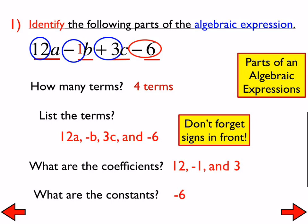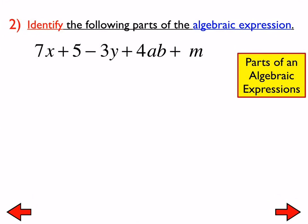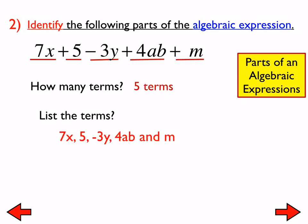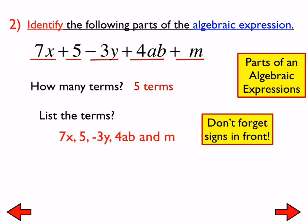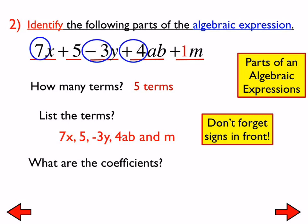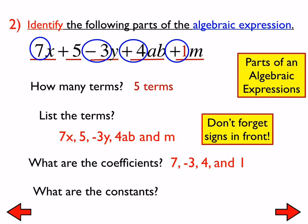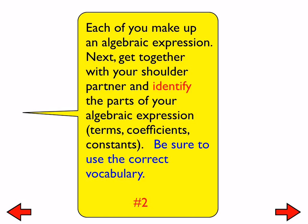Number 2: there are 5 terms. The terms are 7x, positive 5, negative 3y, 4ab, and m (or 1m, same thing). The coefficients are the numbers in front of the variables — don't forget the 1 in front of the m. The positive 5 is a constant.